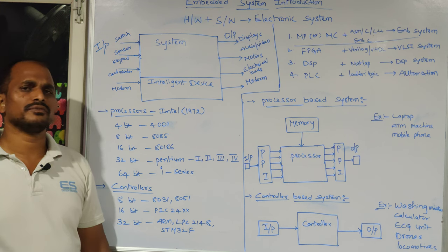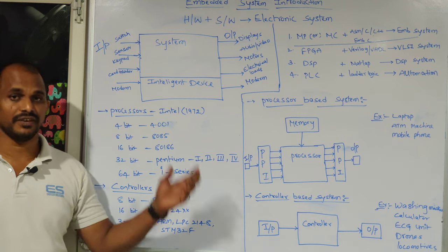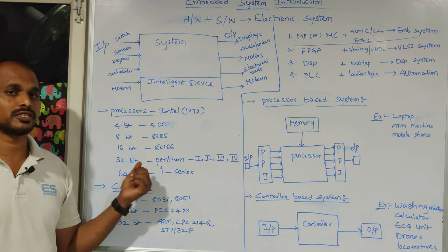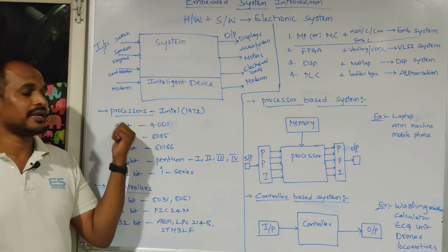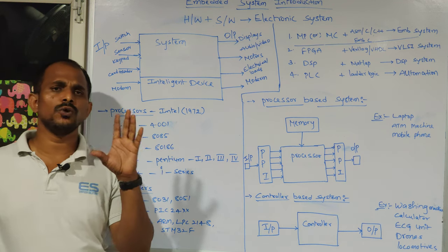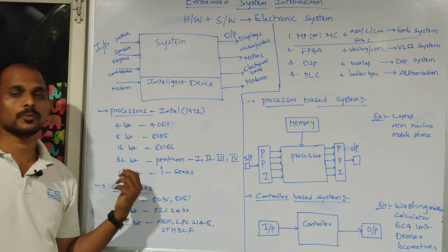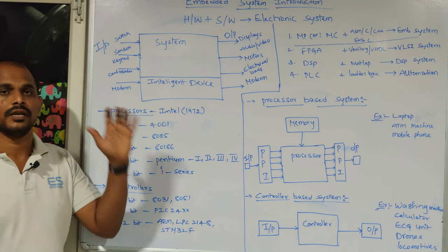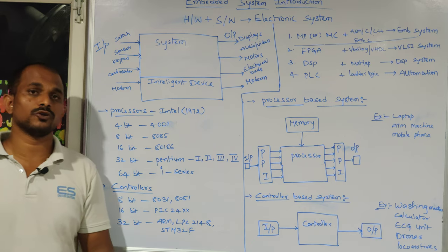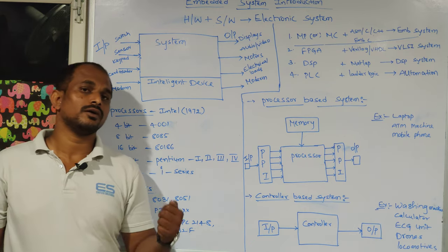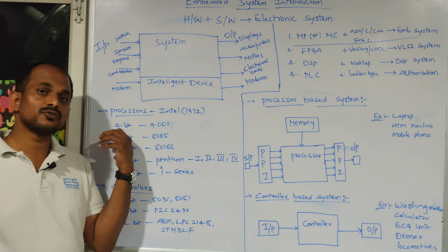Processors are introduced by Intel Corporation in the 1970s. The first microprocessor from Intel was 4-bit generation. Any processor is measured by bit capacity because it processes binary data — zeros and ones. A 4-bit processor handles 4 binary bits; a 64-bit processor can handle 64 binary bits. The next generation after 4-bit was 8-bit, which is the 8085, known from engineering academics.